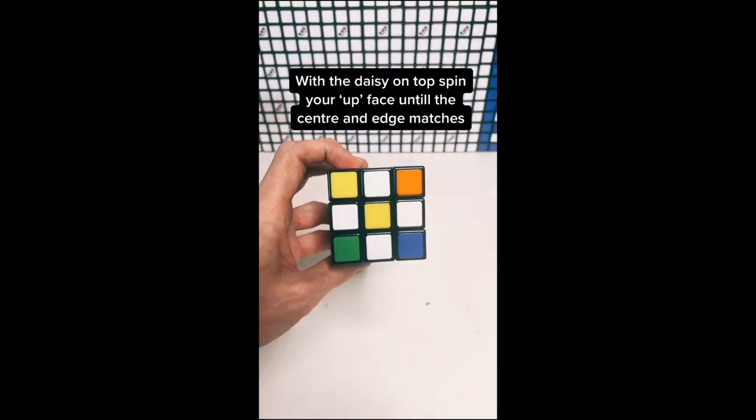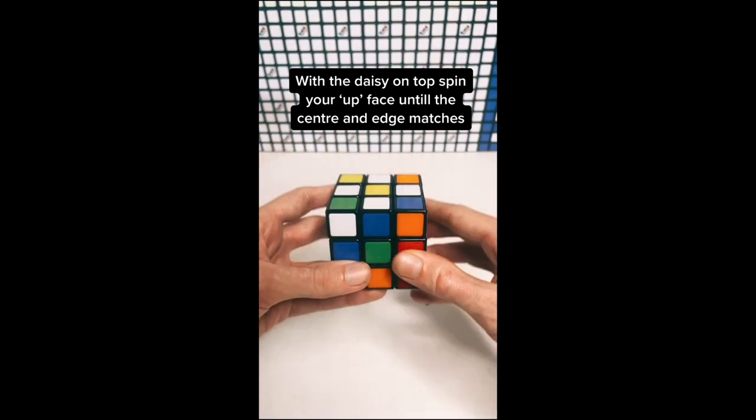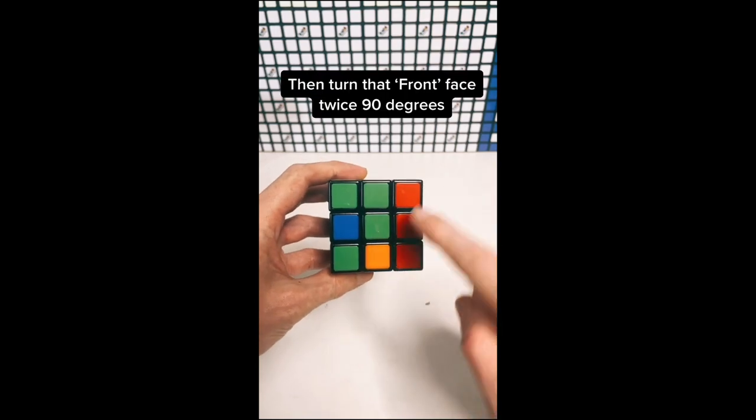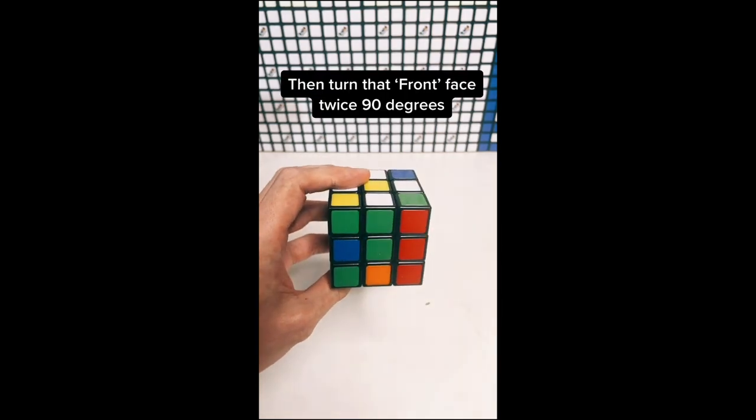With the daisy on top, spin your up face until the center and edge matches. Then turn that front face twice 90 degrees.